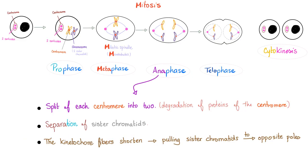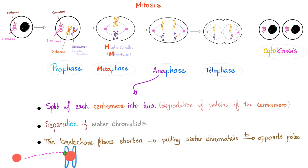Anaphase — ana means up, separation. Split each centromere that was in the center by degrading the proteins of the centromere, and now we have two separate pairs. Separation of the sister chromatids, then the kinetochore fibers will shorten and you pull the sister chromatid to opposite poles of the cell. But what is the kinetochore? Here is your centriole at the pole, and there is the centromere in between. How do they join together? Through the mitotic spindle. When the mitotic spindle reaches for the centromere, it attaches to a doorknob known as the kinetochore — it's like an anchor.